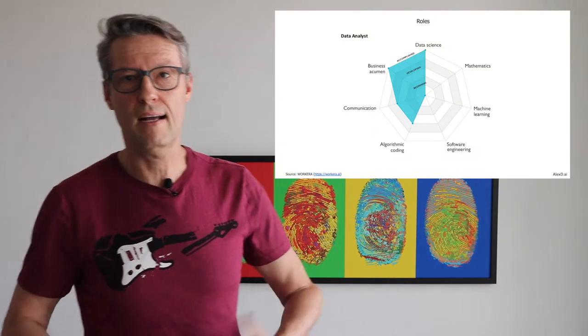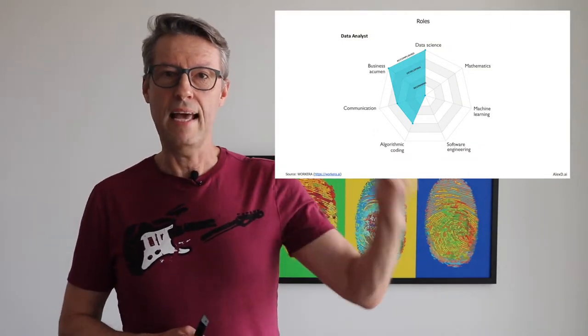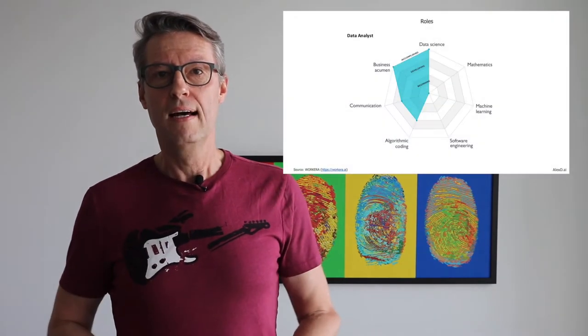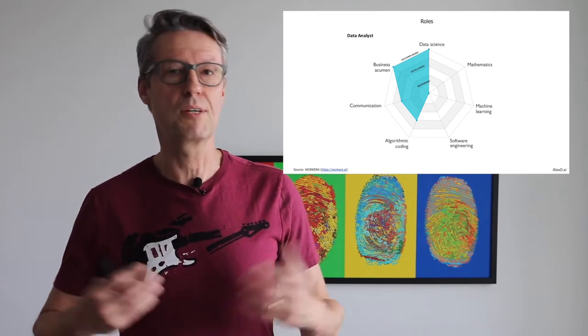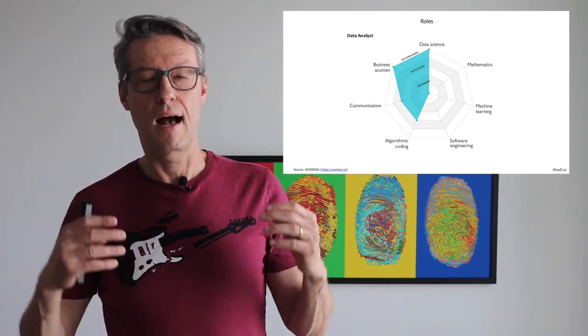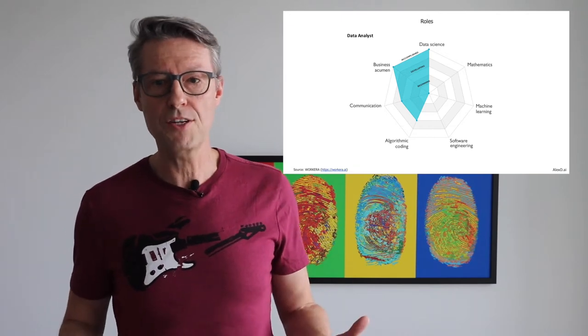The first role is the data analyst. Here you can see a graph that combines the data role. Data analysts work hard to understand and get value with data, understand the business. Here you can see the skills: business acumen, data science, mathematics, machine learning, software engineering, algorithmic coding, and communication. And how much a data analyst must have these skills.